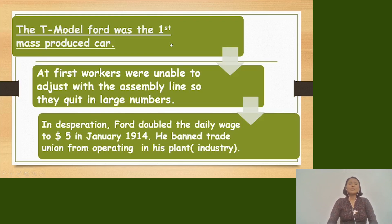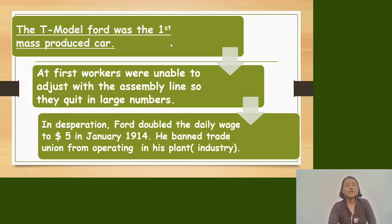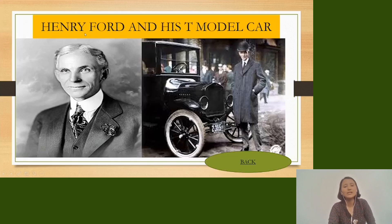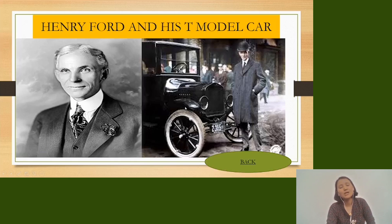The T-Model Ford was the first mass-produced car, and it is called the T-Model Ford. As you can see from the picture, Henry Ford is standing in front of his first mass-produced car, the T-Model Ford.